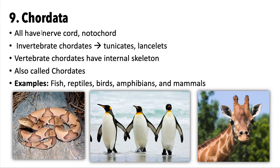The last phylum is Chordata. Chordates have a nerve cord or notochord. There are a few invertebrate chordates, which we'll sneak into the arthropod test for convenience, and then we'll break the rest into two units. Examples include fish, reptiles, birds, amphibians, and mammals — typically fish, reptiles, and amphibians on one test, and birds and mammals on another.